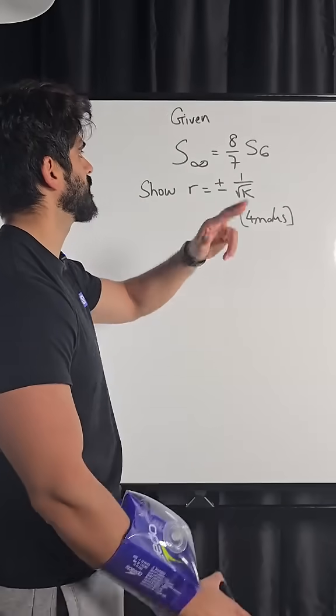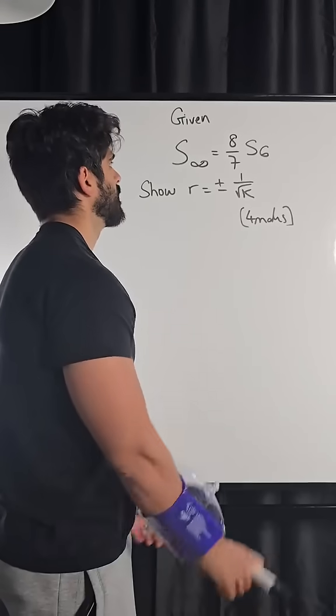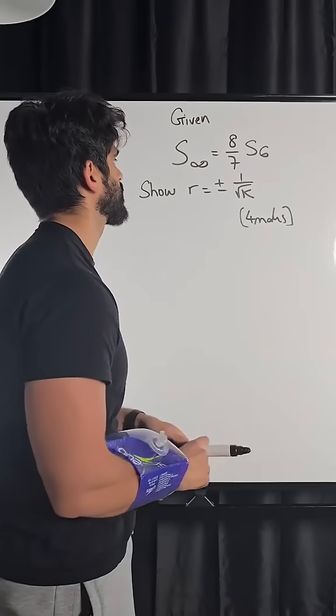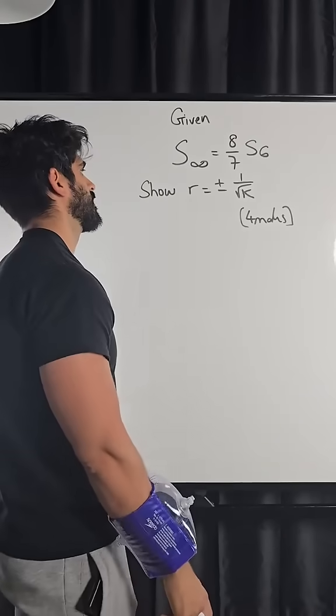So it says given that the sum to infinity is eight sevenths sum of six terms, show that r is plus or minus one over root k.